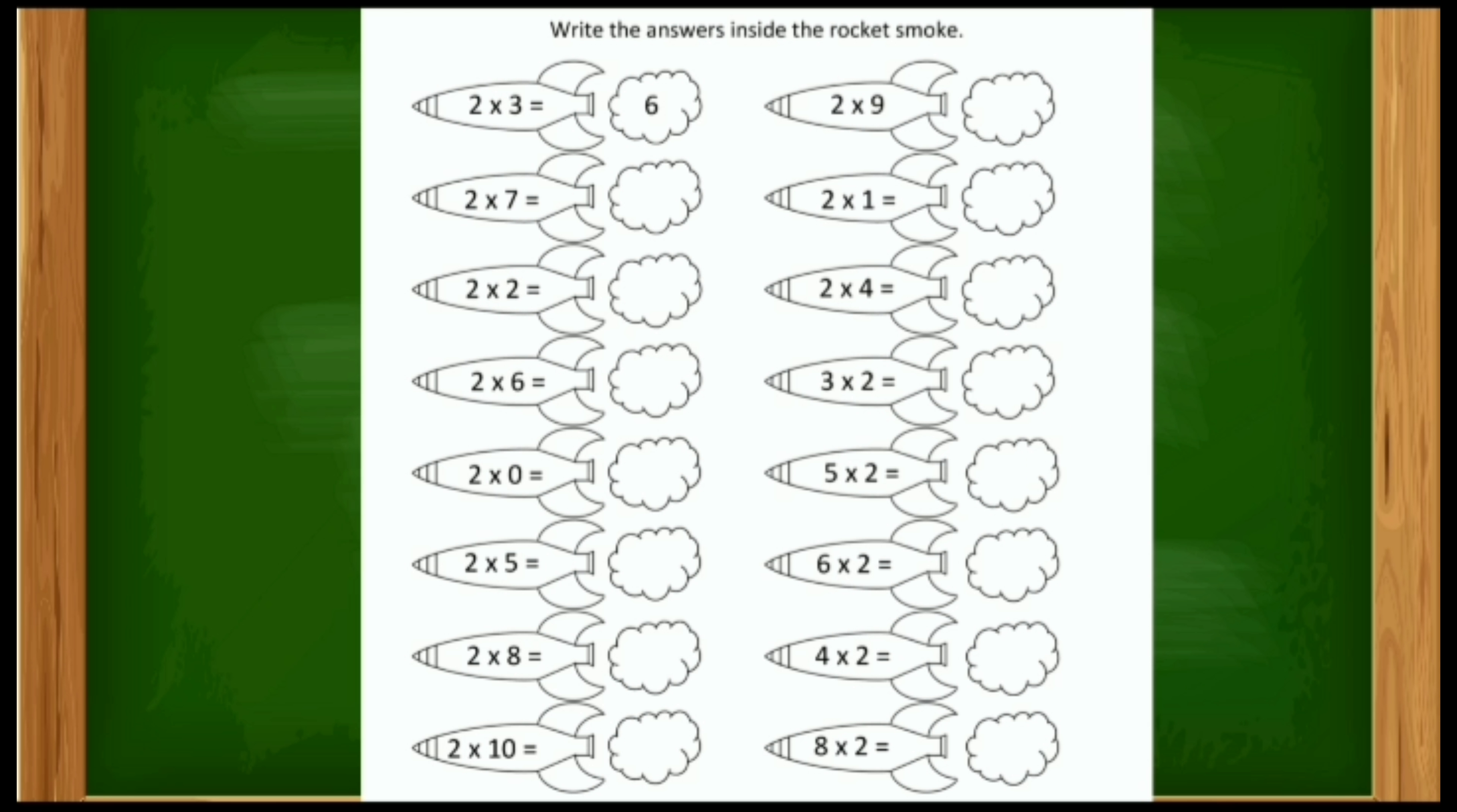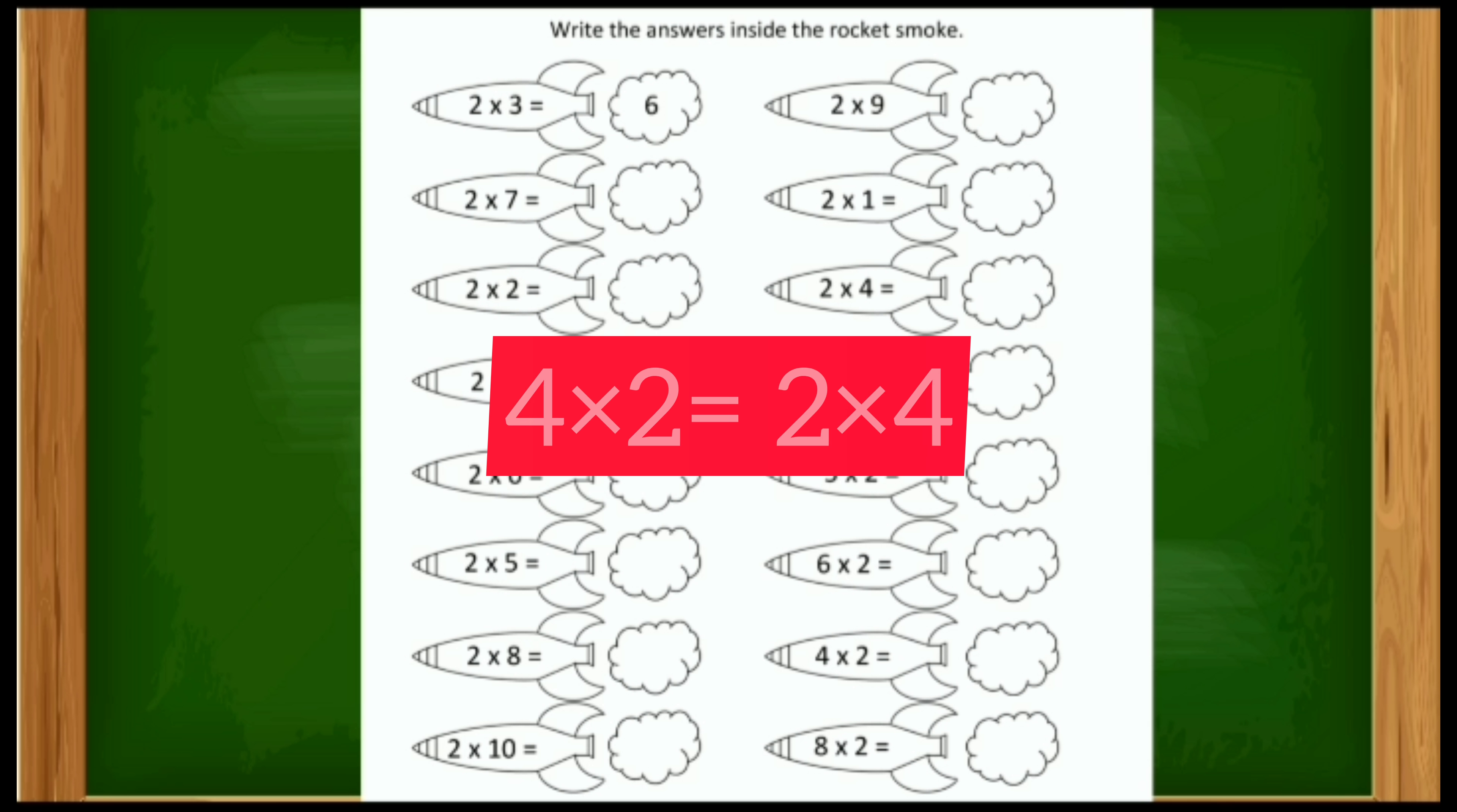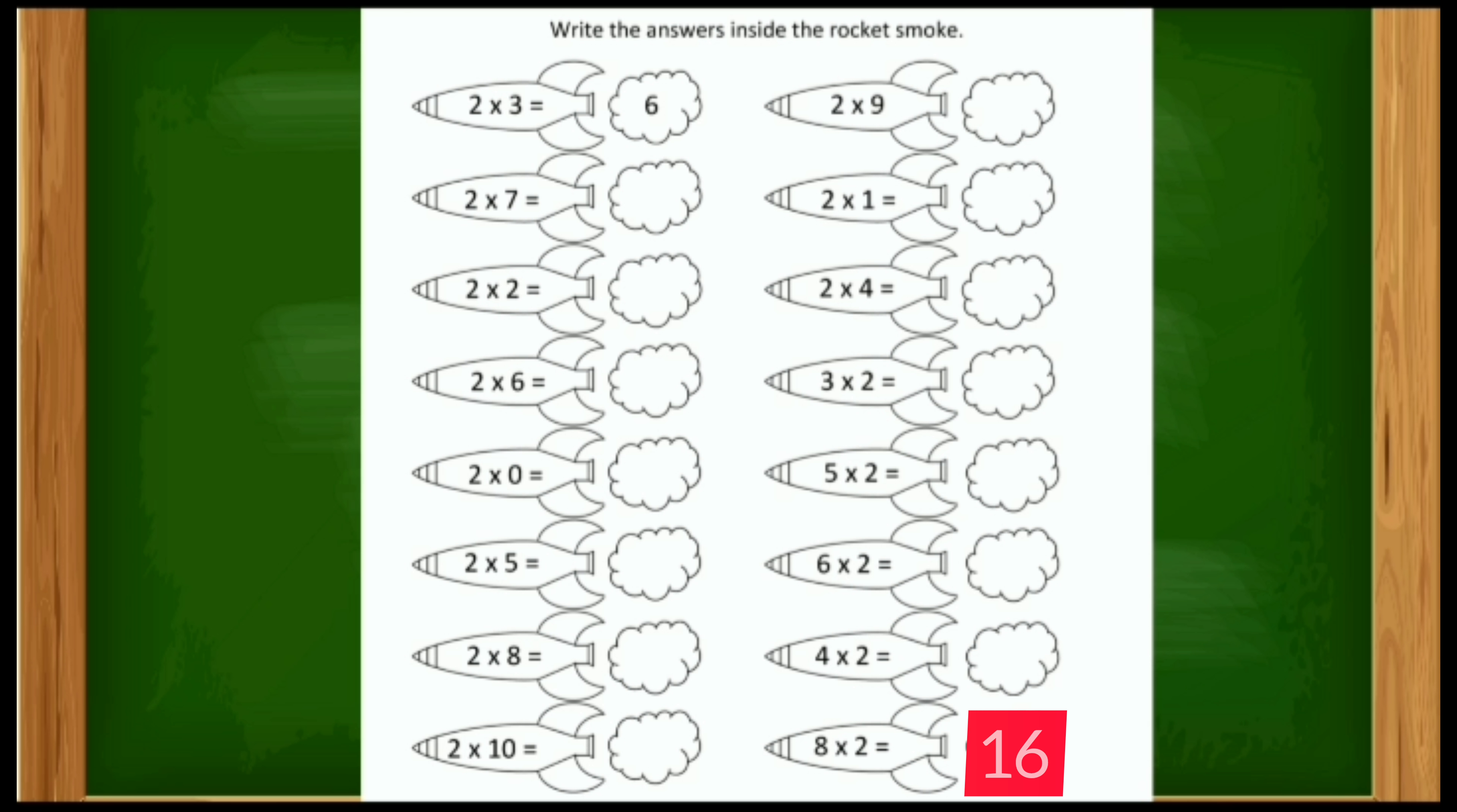Then six twos are, six twos are equals two sixes. Two multiply by six, so the answer is twelve. Four twos are, four twos are equals two multiplied by four. So two fours are eight. Eight twos are, eight twos are equals two multiplied by eight. So two eights are sixteen.